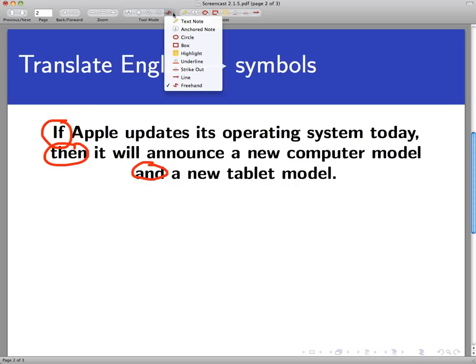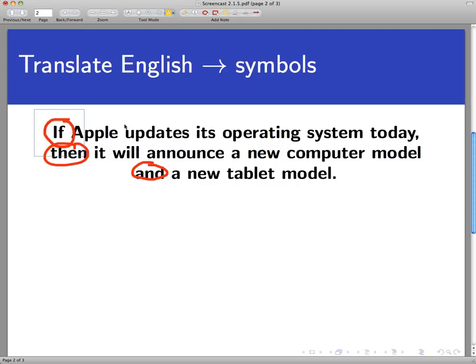Having highlighted those, let's go back and physically with yellow highlight the smaller statements that make this up. First, Apple will update its operating system today. If Apple updates its operating system today. Now notice in the conclusion part of this conditional statement, there's really two things. There's Apple will announce a new computer model and Apple will announce a new tablet model.